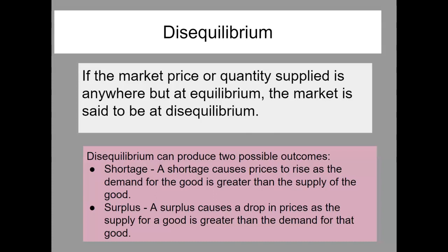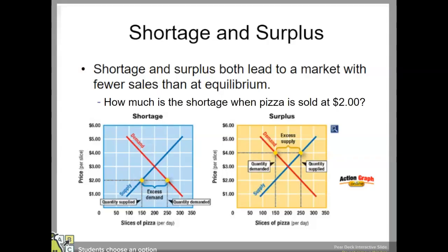Or there can be a surplus — this causes a drop in prices as the supply for a good is greater than the demand for that good. You look at the sale racks at stores like Macy's — the reason they have a gigantic sale is they want to get rid of their merchandise. They have a surplus, maybe a style they made didn't work well. Both shortages and surpluses lead to a market with fewer sales than at equilibrium.